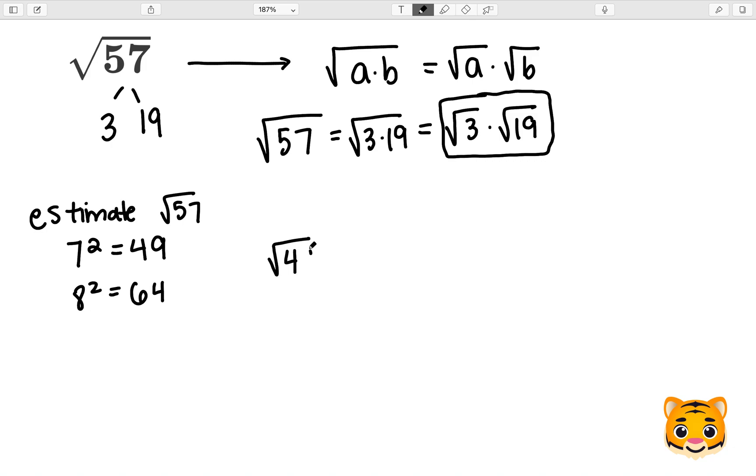Now we can say the square root of 49 is less than the square root of 57 which is less than the square root of 64. We can replace the square root of 49 with 7 because 7 squared gives us 49, and we can replace the square root of 64 with 8 because 8 squared gives us 64. Now we know the square root of 57 lies between 7 and 8.